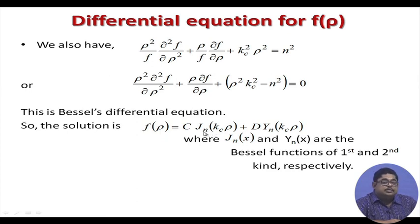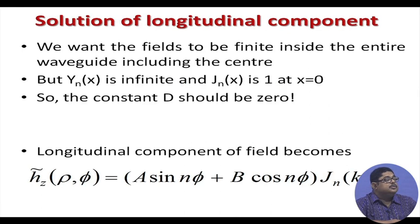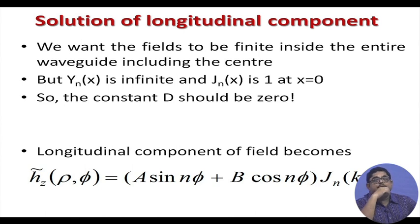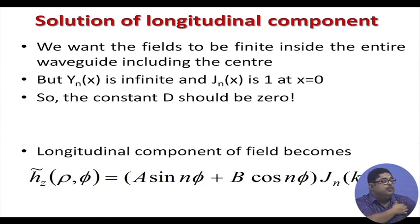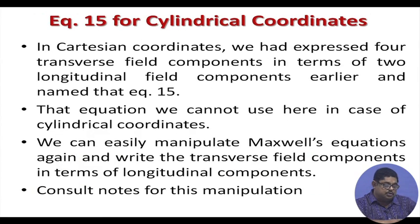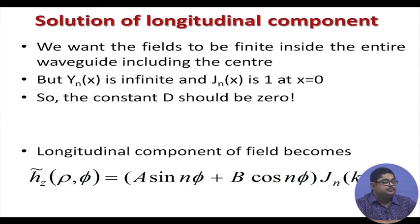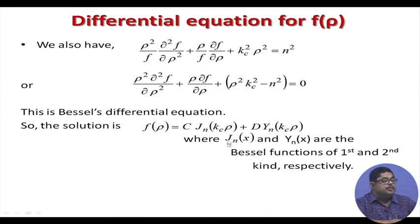The solutions are the first-kind Bessel function J_n and the second-kind Bessel function Y_n. We want the fields to be finite inside the entire waveguide, including the center. However, the Bessel function of the second kind Y_n has a singularity (goes to infinity) at the center. Therefore, Y_n cannot be a valid solution, meaning the coefficient D must go to zero so that term is excluded.